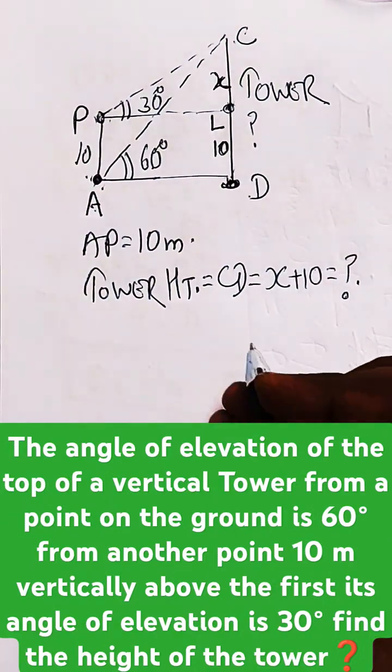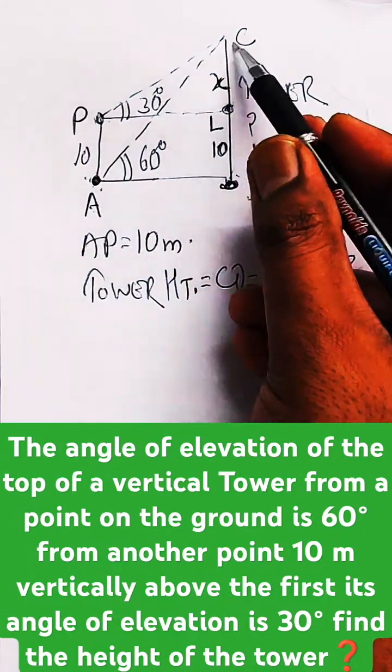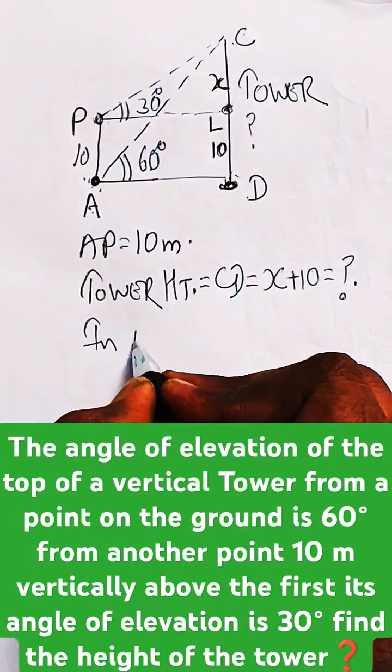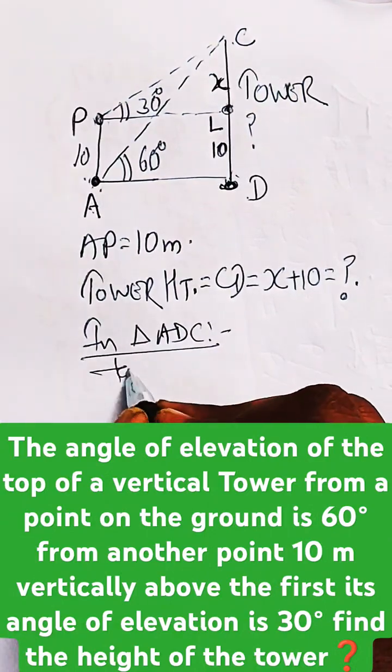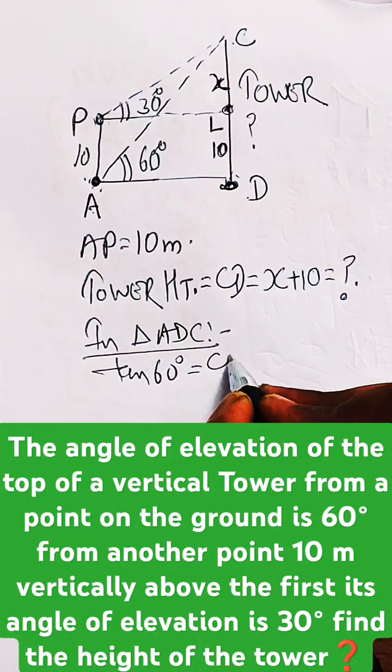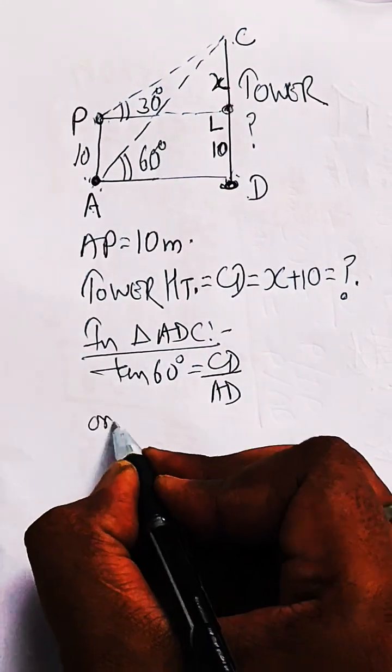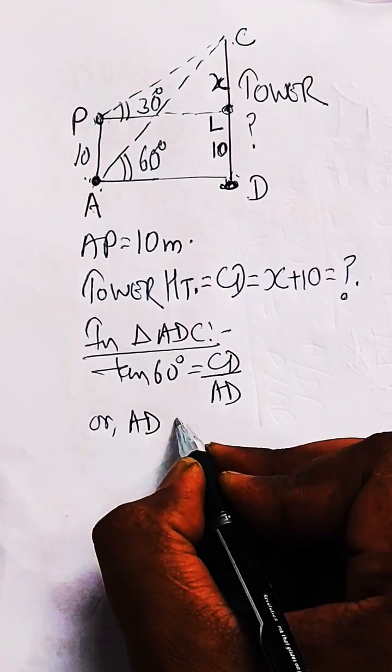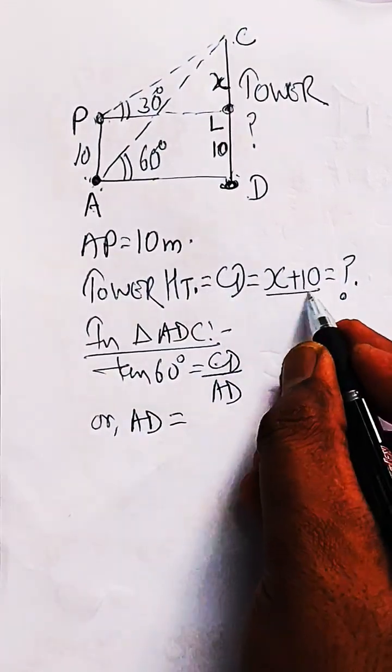Take the first triangle ADC. In triangle ADC, tan of 60 degrees can be written as tower height CD by AD, or AD can be equated as CD by tan 60. CD is X plus 10, so X plus 10 by tan 60, which is root 3, is the value of AD.